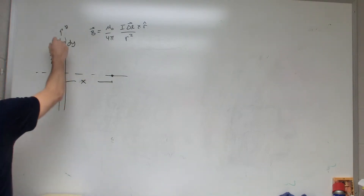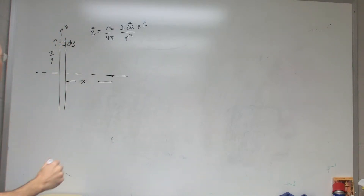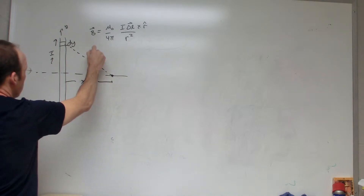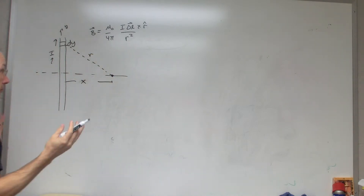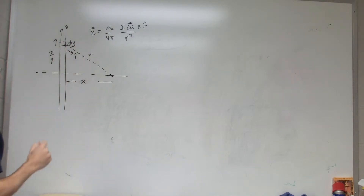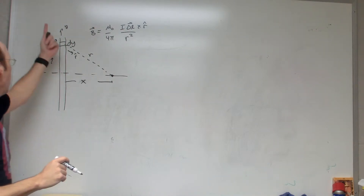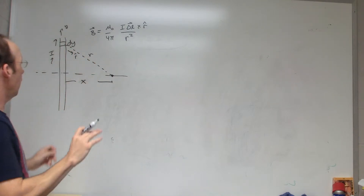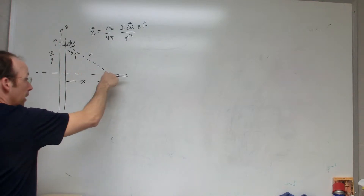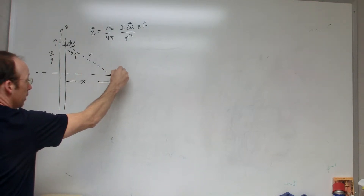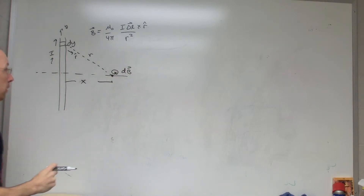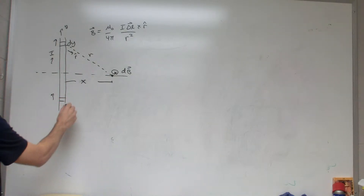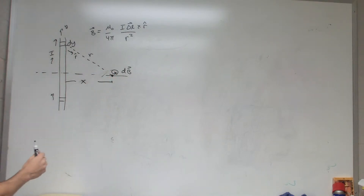So I'll call this dy, with the same current I, and r is the distance. r-hat points in the same direction. Now let's find the direction of the magnetic field contribution: if that's I δL and that's r-hat, then I δL cross r-hat is going into the board. And actually all the vectors — no matter where on the wire — also point into the board. All pieces are in the same direction.